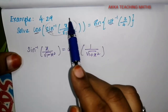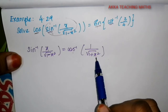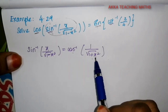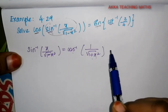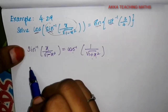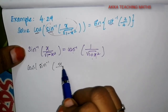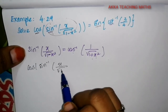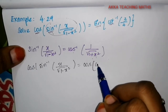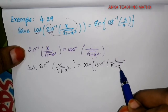We use the property: cos inverse of 1 by root of 1 plus x square is equal to sin inverse of x. This is the 9th property. So we change the cos inverse of sin inverse of x divided by root of 1 minus x square to cos inverse of 1 divided by root of 1 plus x square.